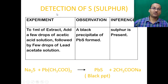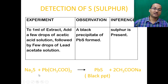To test for sulfur, take 2 ml of extract and add a few drops of acetic acid followed by a few drops of lead acetate solution. If sulfur is present, sodium sulfide in the extract reacts with lead acetate to form lead sulfide, which precipitates as a black precipitate, confirming that sulfur is present.